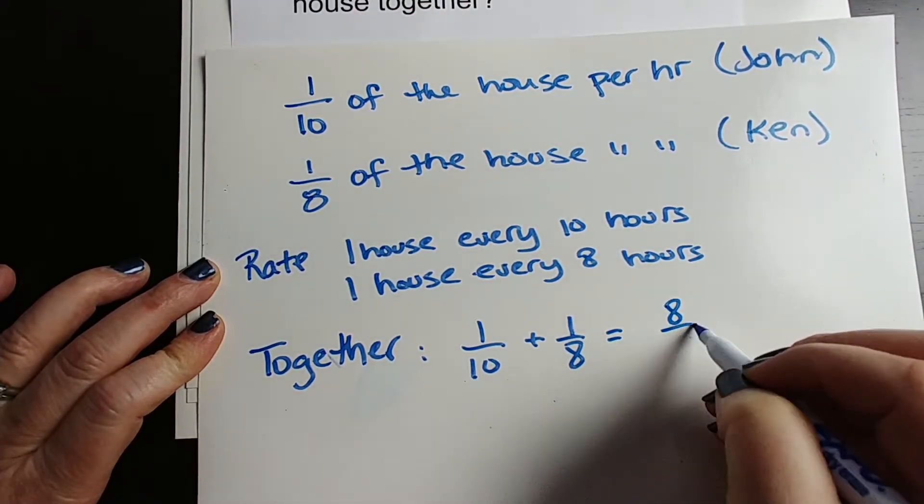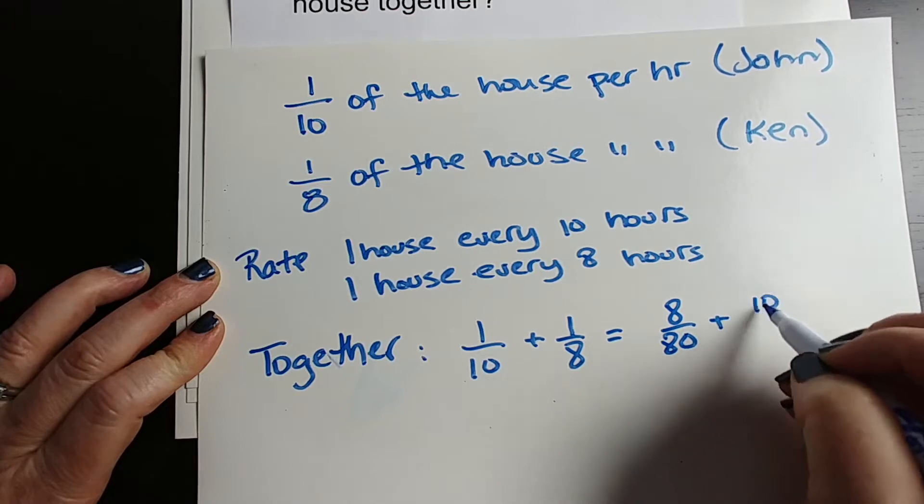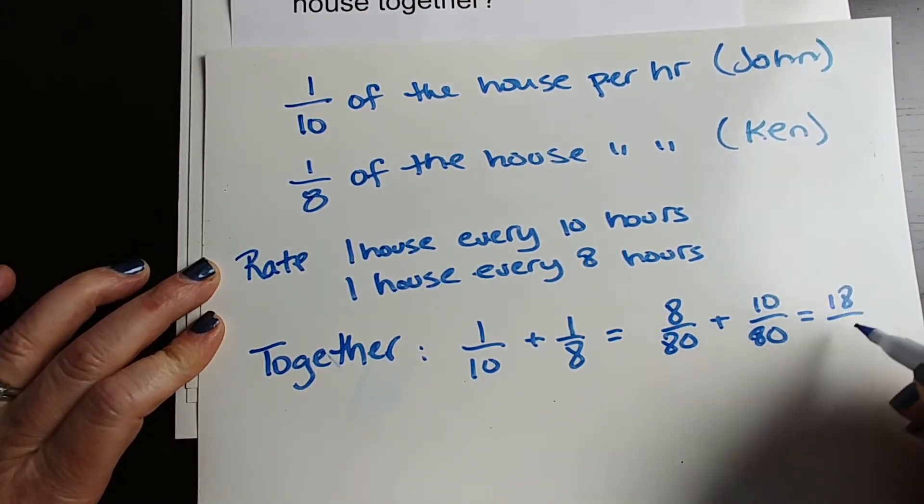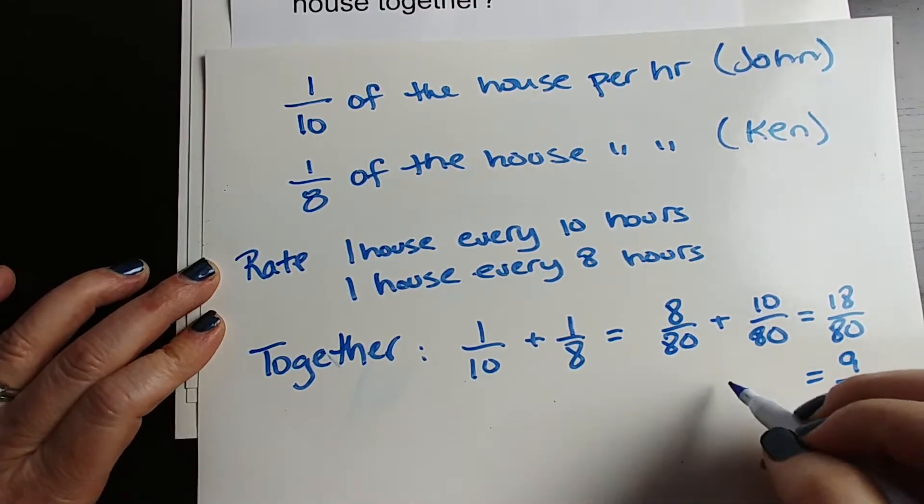So that's basically 8 80ths plus 10 80ths, right? And that is 18 80ths. Well, that's ugly. So 9 40ths. That's their rate together.